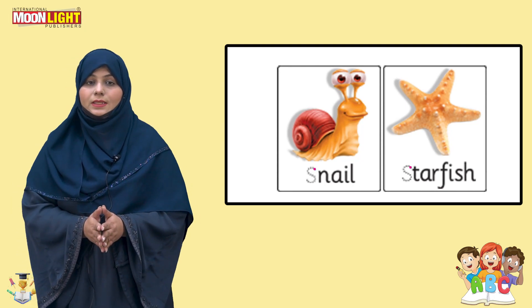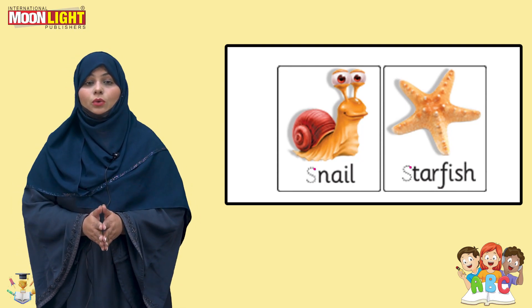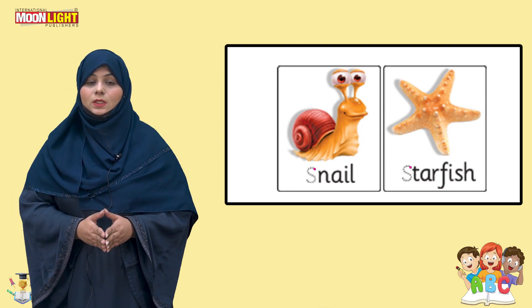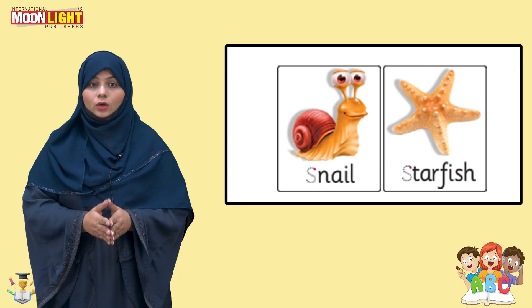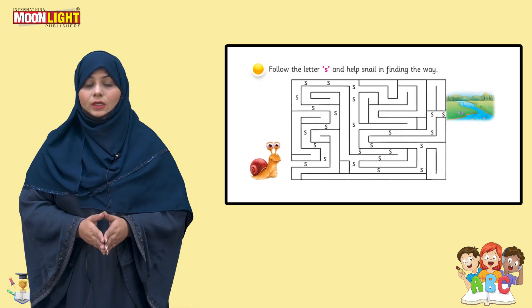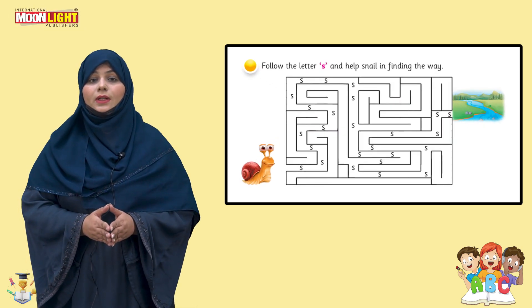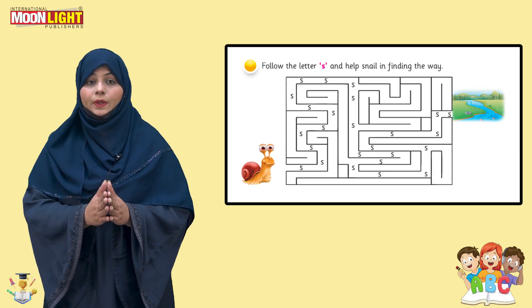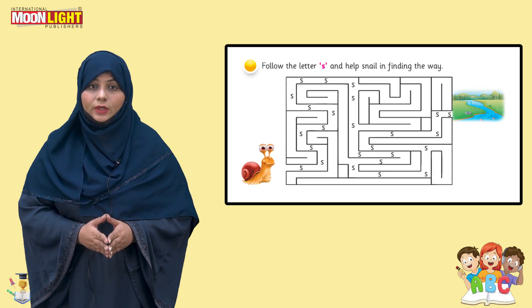Now there are two pictures. First, students are going to trace letter S, then you are going to read the words by the spelling along with the students. Now there is an activity — here is a time that you can generate a helping nature in your students.